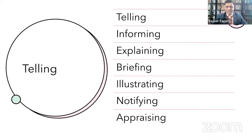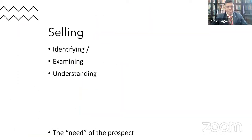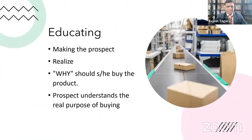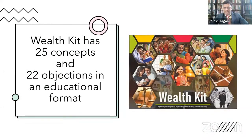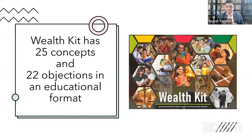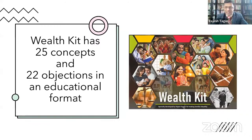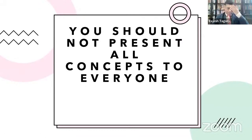We spoke about the four levels of selling. The four levels are: asking — which means requesting, pleading, begging; then the telling level — informing, explaining, briefing; then the selling level — identifying, examining; and then the educating level, which means making the prospect realize why he should buy insurance. We concluded those couple of strategies yesterday.